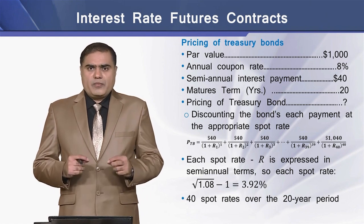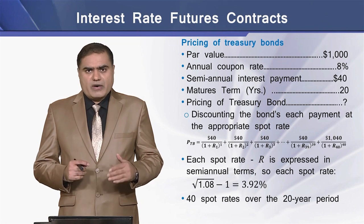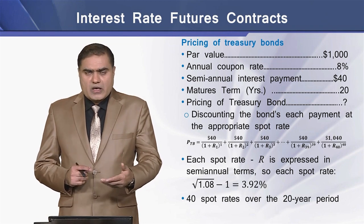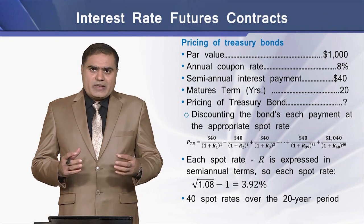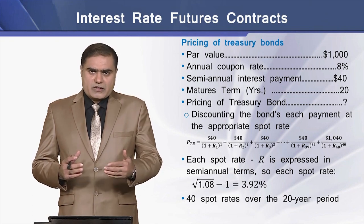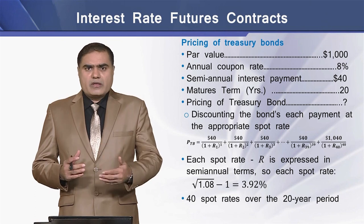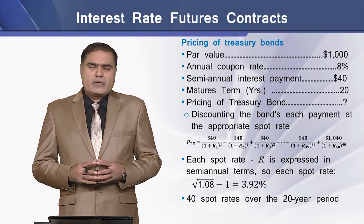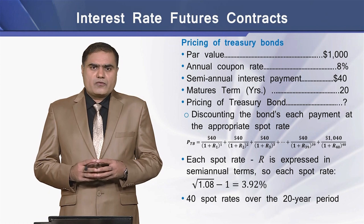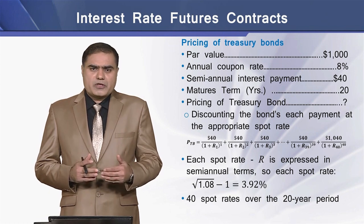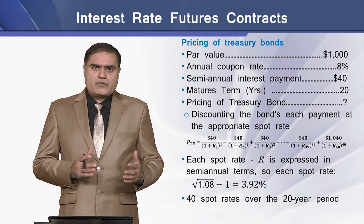This is a one-period spot rate used to discount a one-period cash inflow on the bond. Since there are 40 periods on this bond, there are accordingly 40 payments. We will be using 40 spot rates to discount 40 payments in order to determine the price of the bond as of today.